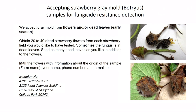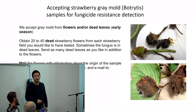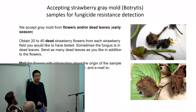This year we are accepting strawberry gray mold samples for fungicide resistance detection. If you're interested in finding out your potential resistance issues, you're welcome to send dead flowers or dead leaves — where we're most likely to get Botrytis. Send flowers with black centers — most likely killed by frost damage early in the season — and we test for resistance to different fungicides you commonly use. We should be able to get results back to you in 10 days or so, hopefully allowing you to adjust your spray program.